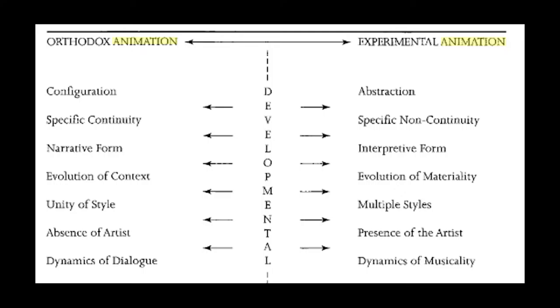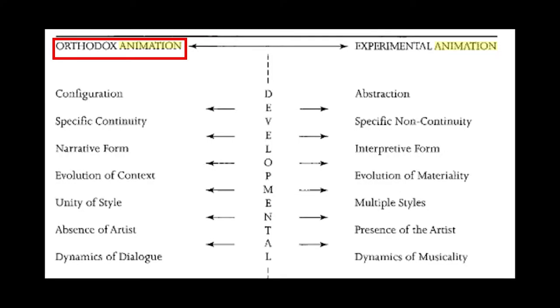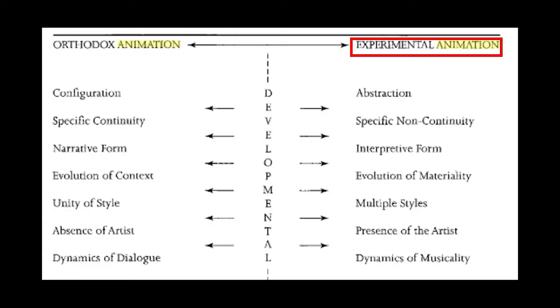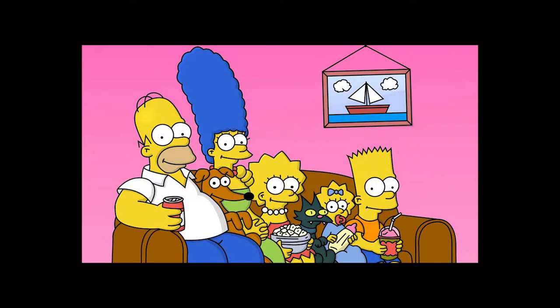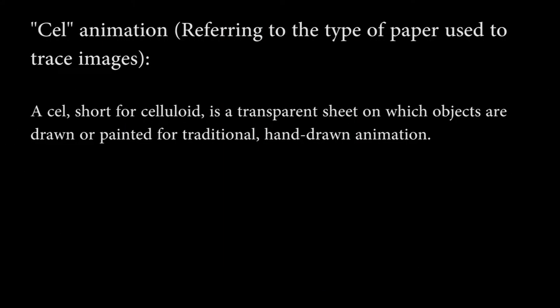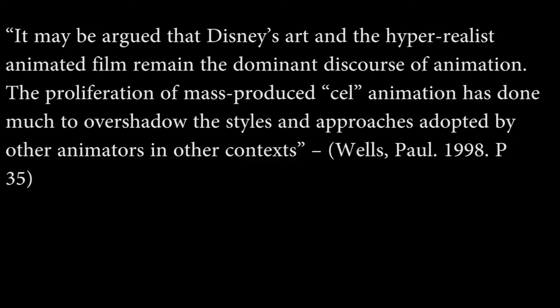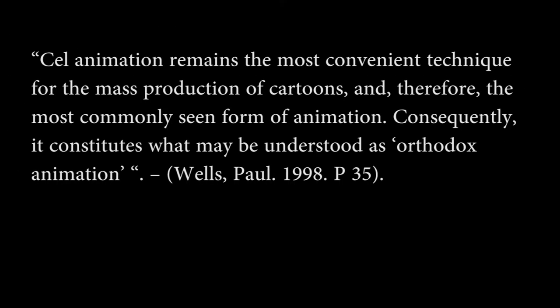Wells divided his graph into two halves, one representing orthodox animation and the other representing experimental animation. Orthodox animations are ones that we, as audiences, are exposed to frequently, such as Family Guy and The Simpsons. Wells labelled this type of animation as cell animation, and accused its proliferation of overshadowing the styles and approaches adopted by other animators. Paul Wells then went on to label cell animations as the most commonly seen form of animation, before stating that this therefore means it constitutes what may be understood as orthodox animation.